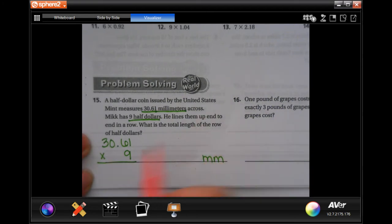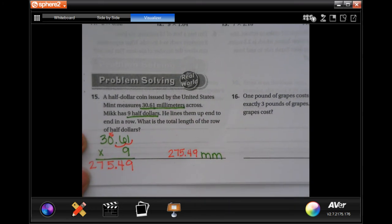So, nine times one is nine. Nine times six is 54. Four down, put your five up. Nine times zero is zero, plus five is five. Nine times three is 27. Now, the question went in one, two places, so we're going to go in one, two places. So, 275.49 millimeters.